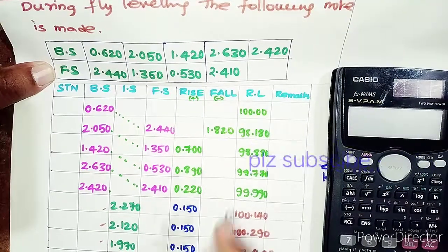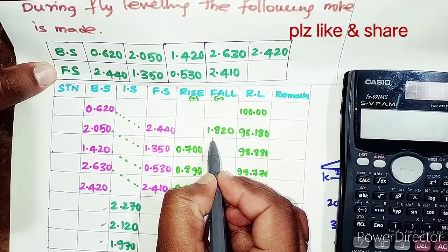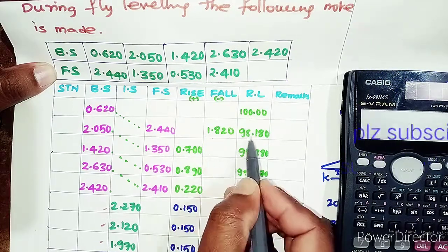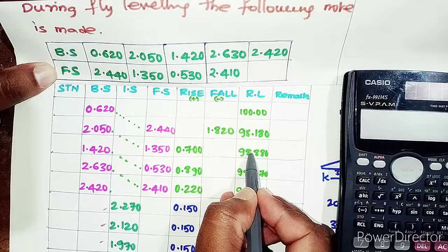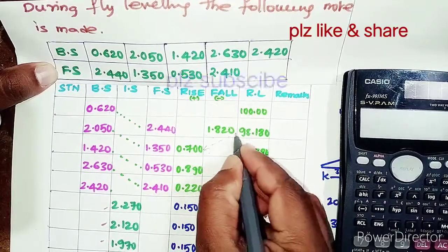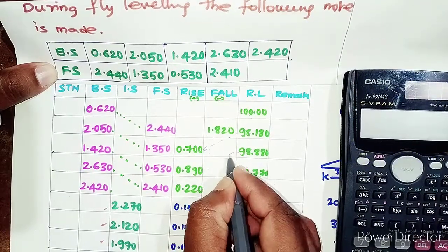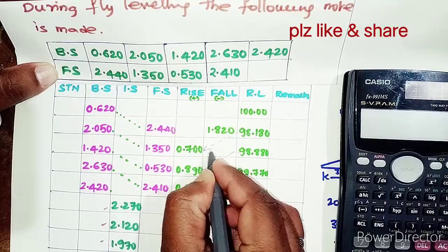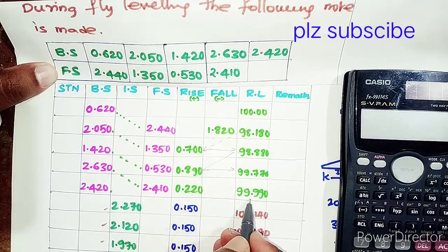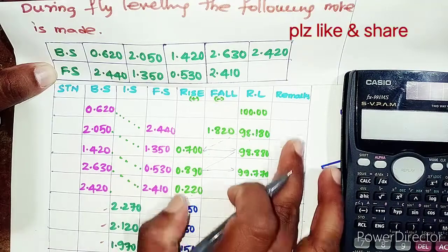Next, the RLs are calculated. RL starts at 100; 100 minus 1.820 gives 98.180. Where the value is positive, we add it to the previous RL. Continuing this way: 99.770 plus 0.220 gives 99.990, and so on for all stations based on the given data.